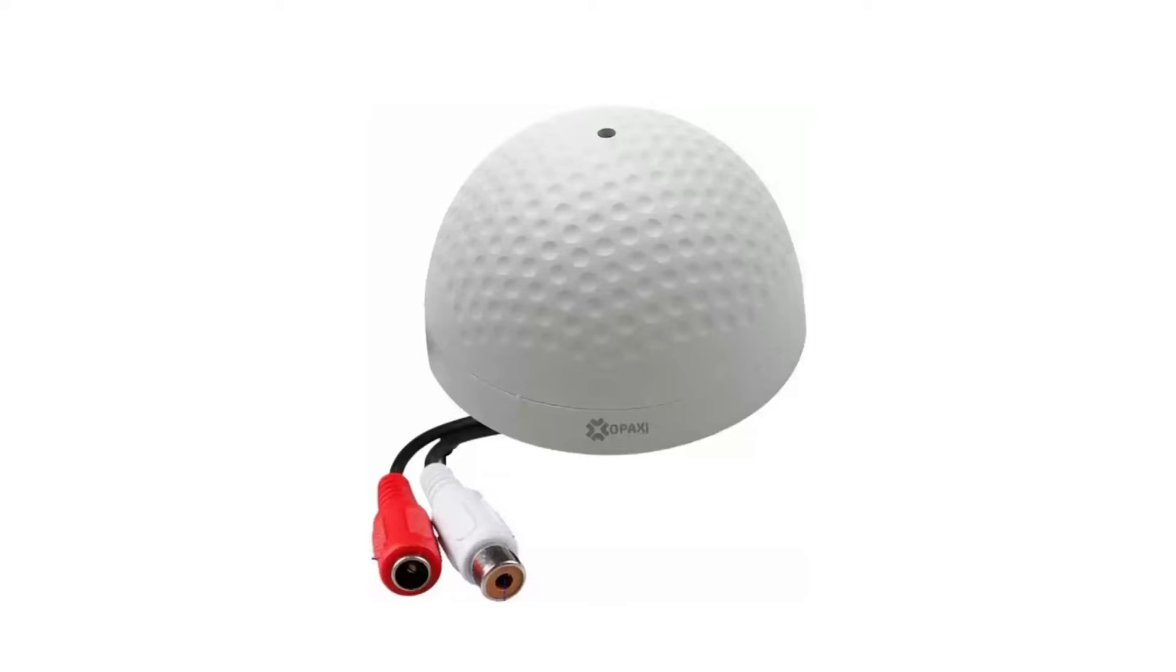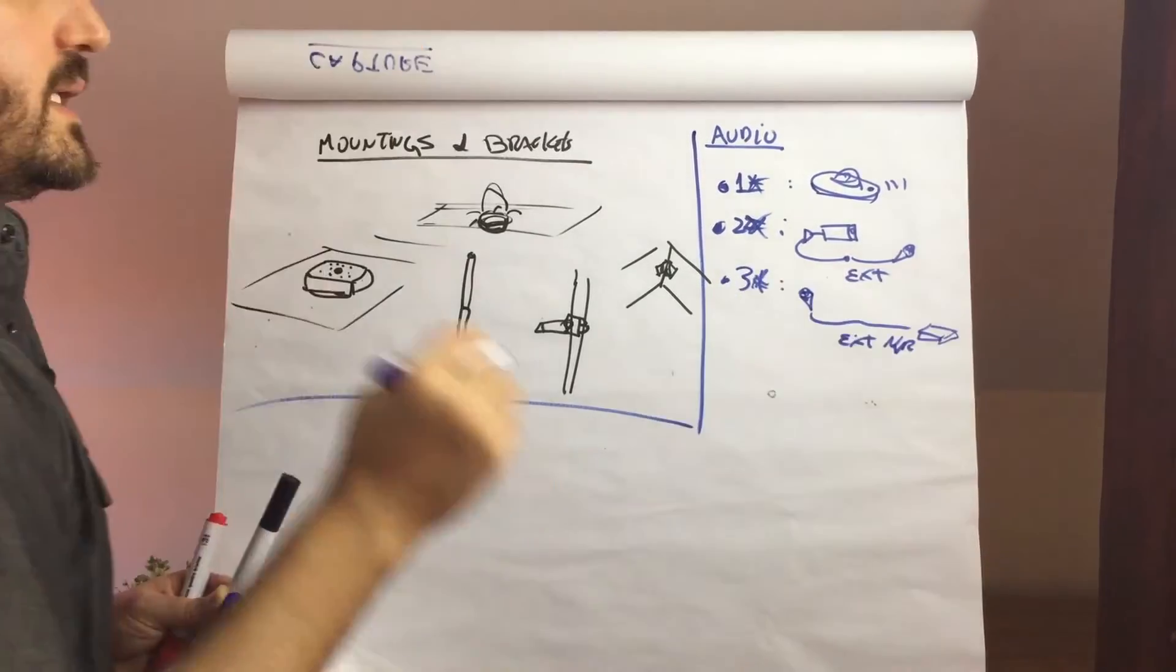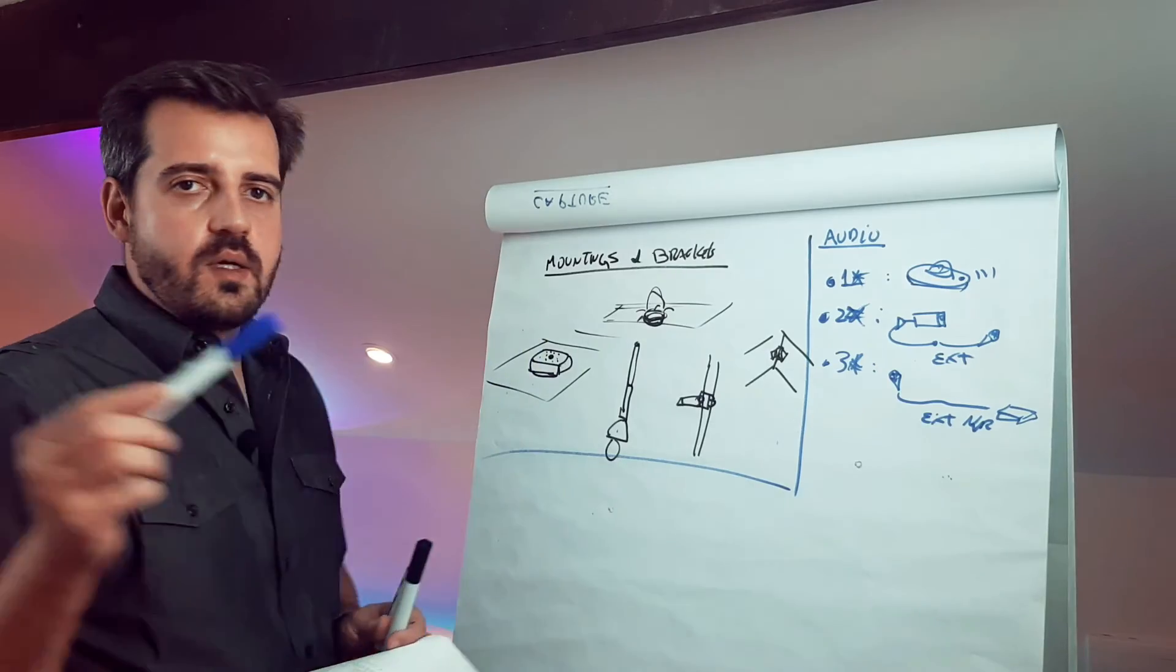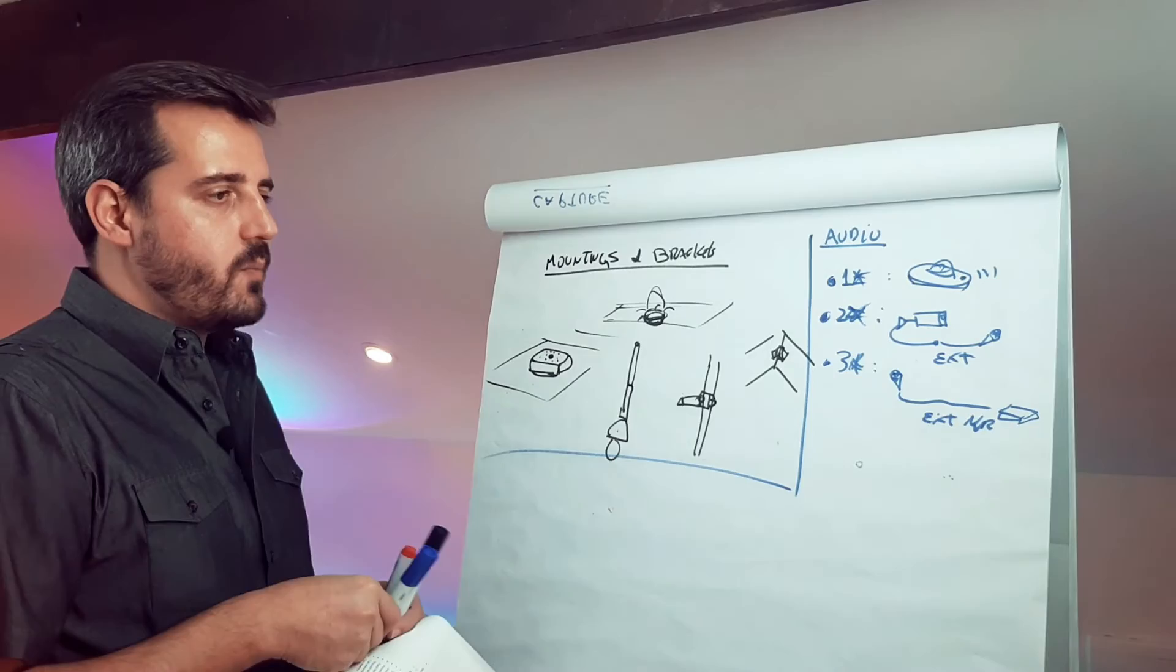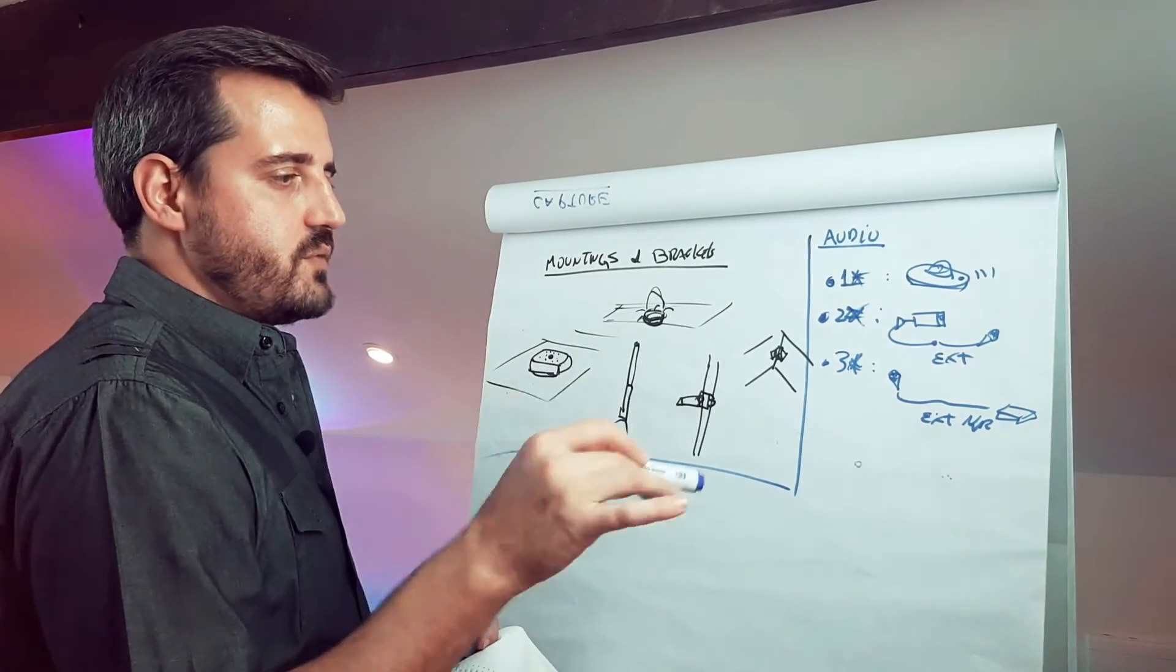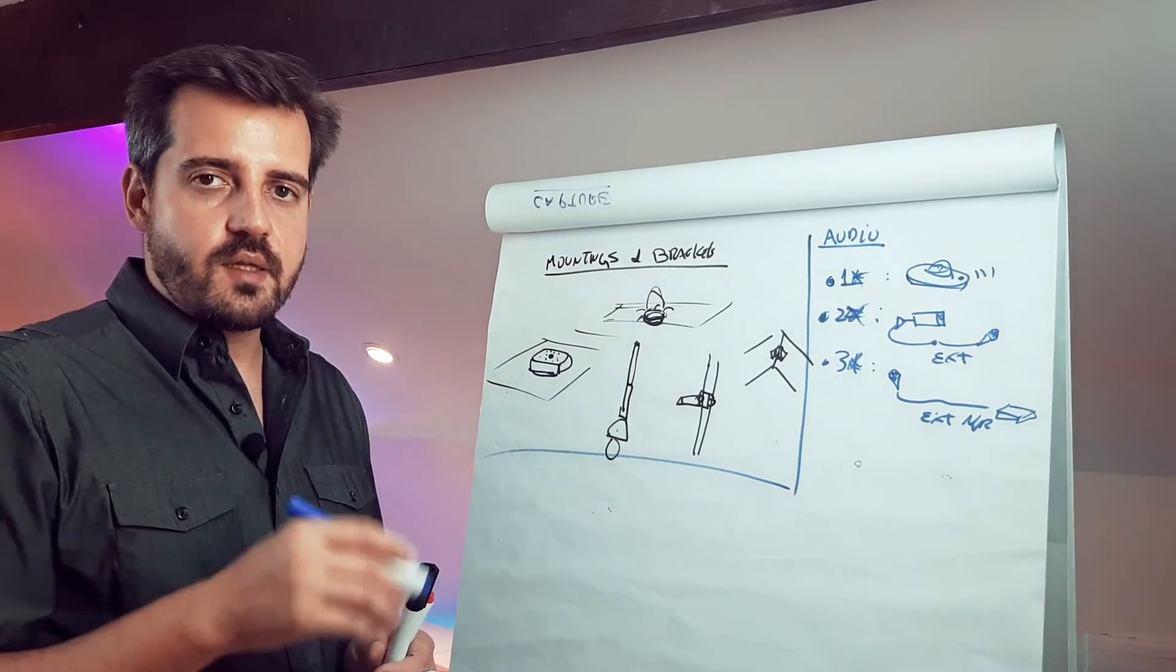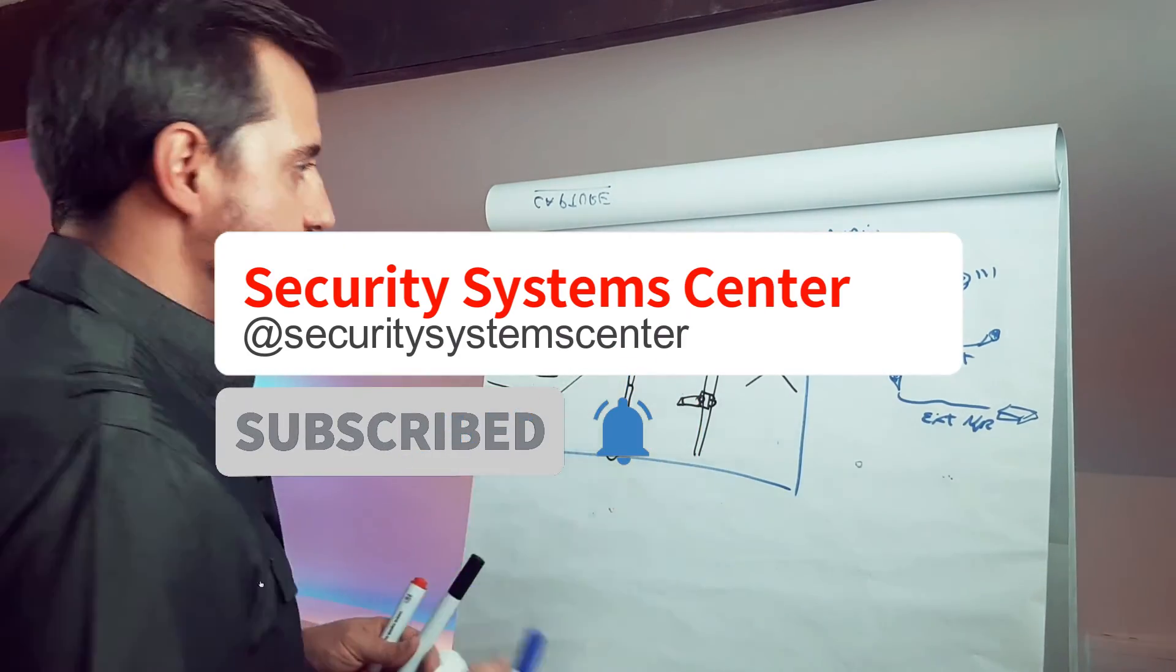And the third one is the external microphone connected directly to the NVR. In this type of installation, the audio line will go in parallel with the ethernet cable or the coax cable and it will record directly in the NVR. Some NVRs have specific inputs that will be able to record the audio with that channel that is associated with. So it's another way to capture the audio information.